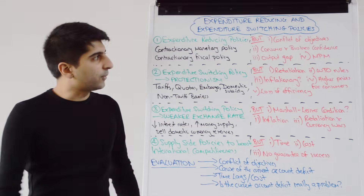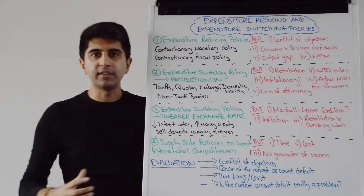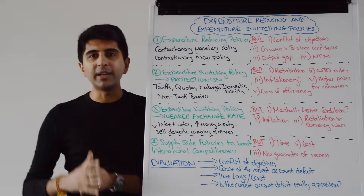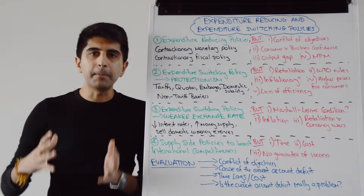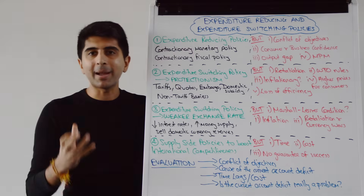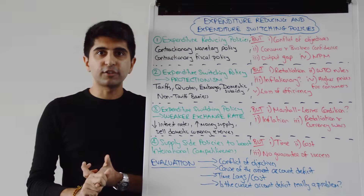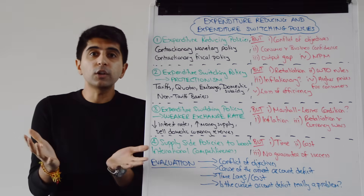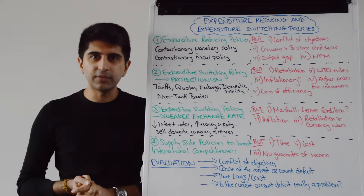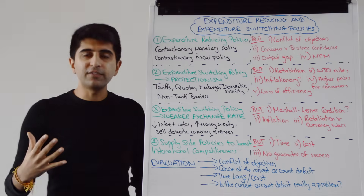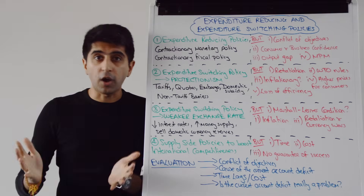All well and good for those intentions, but on the other hand there is a big conflict of objectives here. By reducing aggregate demand, you might close your current account deficit and improve your trade performance. But there are other, more important macroeconomic objectives for the government to hit. By reducing aggregate demand, growth is going to reduce, unemployment is going to increase, and you might well cause a recession in the economy. Is that really worth closing your current account deficit? With lower demand-pull inflation, inflation might well go below the target rate, which is not ideal either.